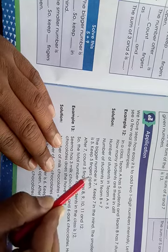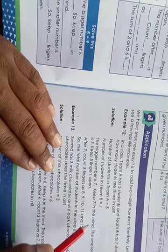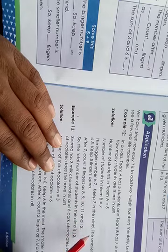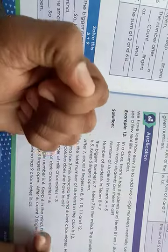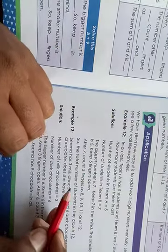Say 7 loudly: 7, 8, 9, 10, 11, 12. We counted 5 more after 7. So the total number of students in the class is 12. You have to say the bigger number loudly and count the remaining numbers on your fingers.